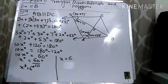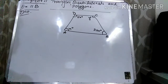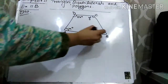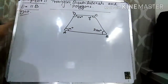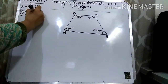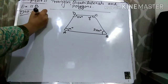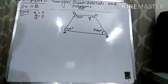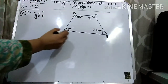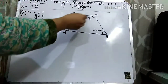Now let's move forward to question number 10. Question number 10: the figure shows a trapezium A, B, C, D where AB is parallel to DC. They have told you that AB and DC are parallel lines. Find the value of x and y. You know that a trapezium has one pair of parallel lines — so these two, AB and DC, are the parallel lines.